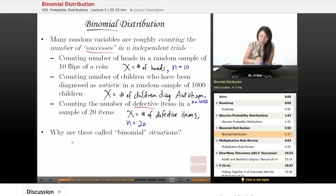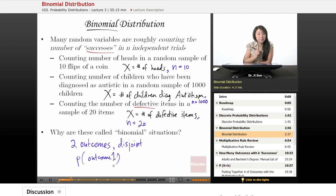These are binomial situations because there are two outcomes that are disjoint - it's one or the other. If you add the probabilities of those outcomes, so the probability of outcome one plus the probability of not outcome one, then you should get one.